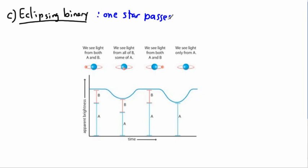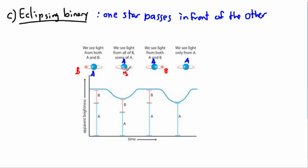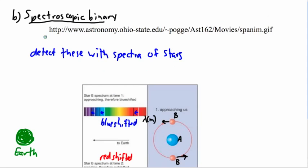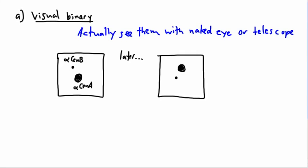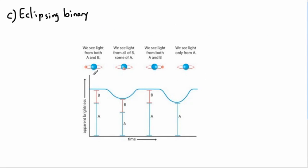In an eclipsing binary, we don't visually see the stars separately — what we detect is only the apparent brightness of the combined star system. As we watch, the brightness goes down and then back up, then down again and back up. When both stars are fully visible, we see all the light from A plus all the light from B — maximum brightness. But when star B passes in front of star A, we see all of B's light but only part of A's light, so brightness dips.